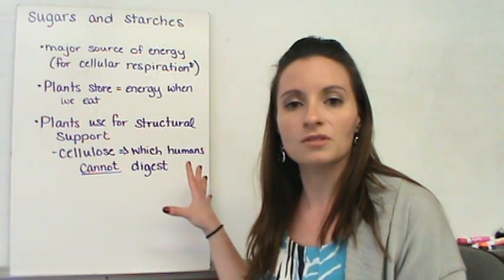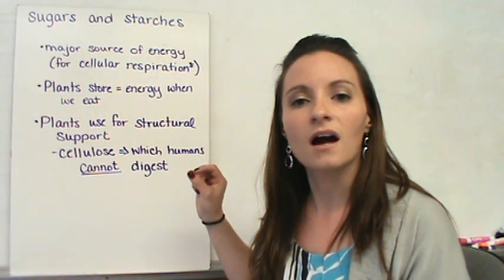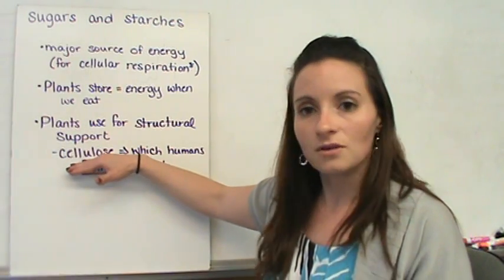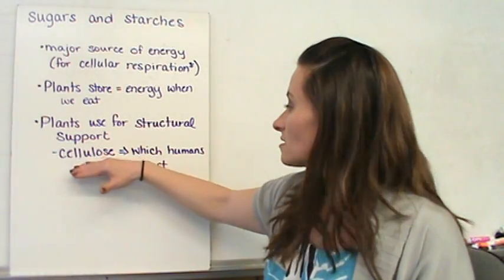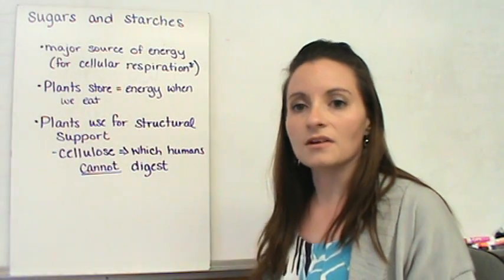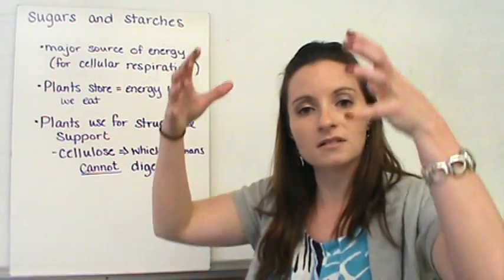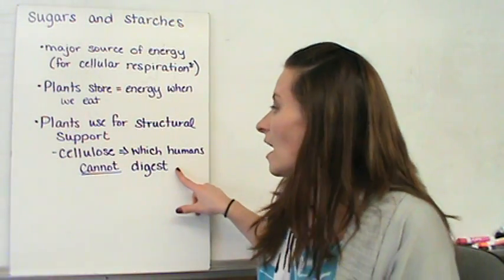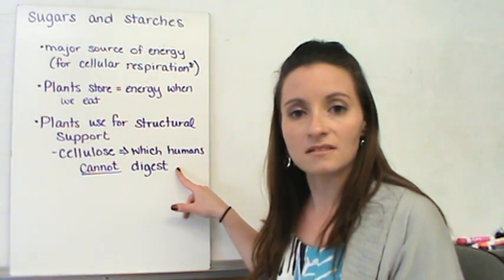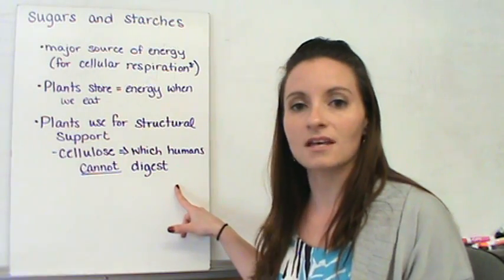Some plants use carbohydrates for structural purposes. The cellulose piece is structural for the plants. They're in bark of a tree. They're the major piece that helps support whatever plant you have. Humans actually cannot digest cellulose, so we couldn't eat a tree because we couldn't digest that cellulose.